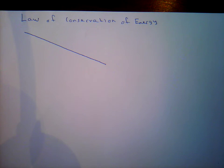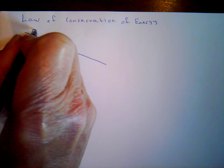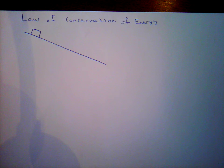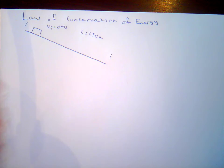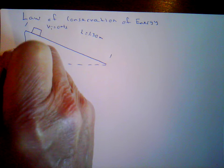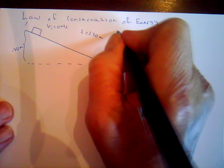Previously, before we used energy relationships, we used forces and vector analysis to solve inclined plane problems. But using energy relationships makes it even easier. Let's say we have an object at the top of the ramp with an initial velocity of zero. The length of the incline from top to bottom is 1.30 meters, the vertical height is 0.40 meters above the ground, and the mass of the object is 0.500 kilograms.